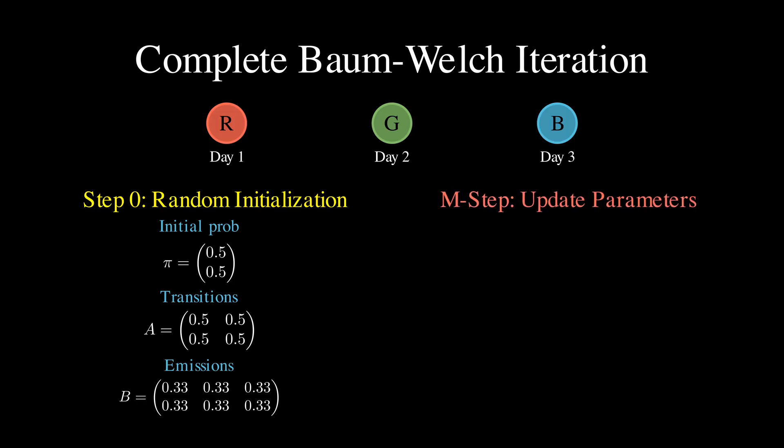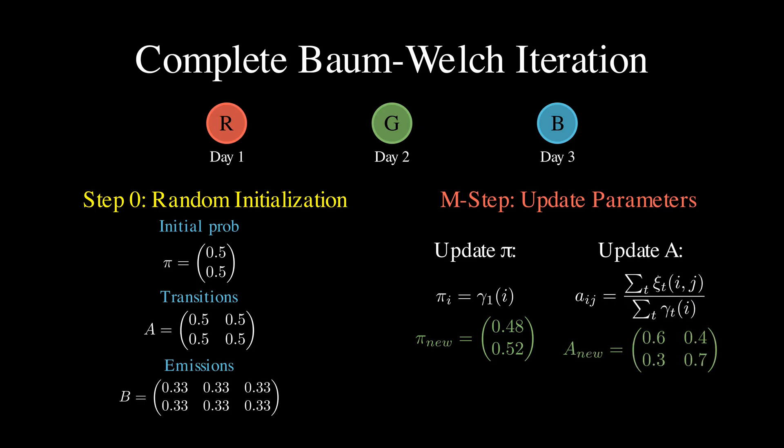Then, in the M-step, we count up these probabilities to update our parameters. If gamma tells us we are probably in the sad state more often when we saw blue hats, then we'll increase the emission probability of blue given sad. If xi tells us we probably transitioned from happy to sad frequently, then we'll increase the transition probability.